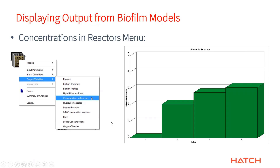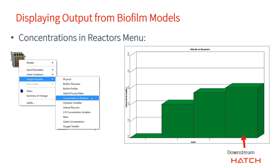There's also 'concentrations in reactors,' which looks only at the bulk liquid as it passes through the length of the unit — not into the biofilm. This is the same as when you have a plug flow tank and plot concentrations going down through the reactors. Upstream is on the left when it enters the tank and downstream is on the right.